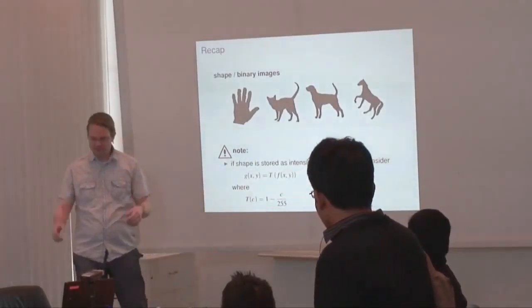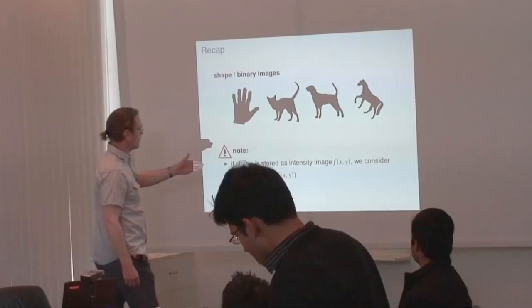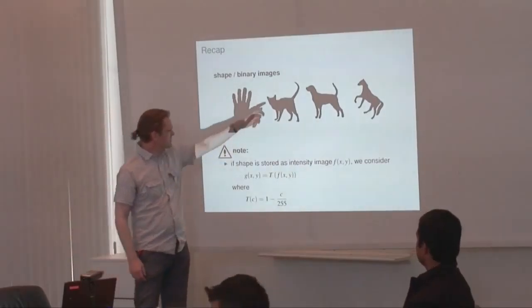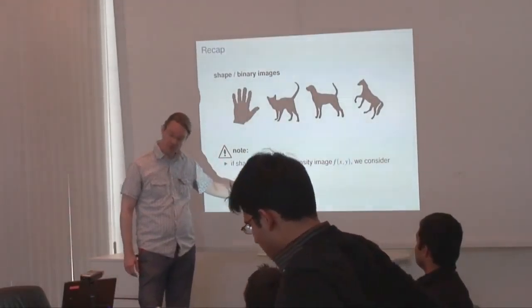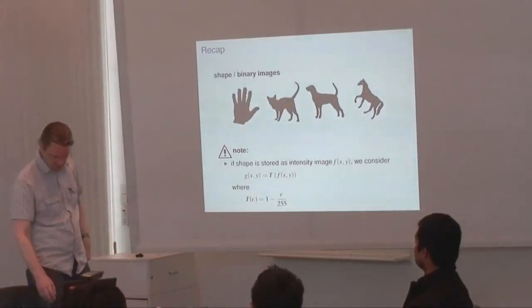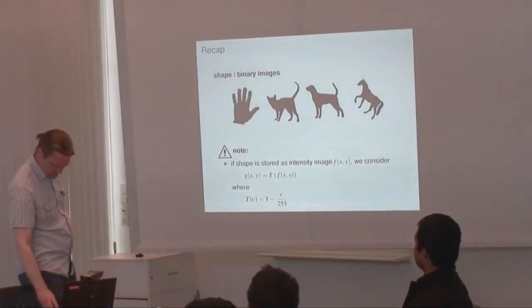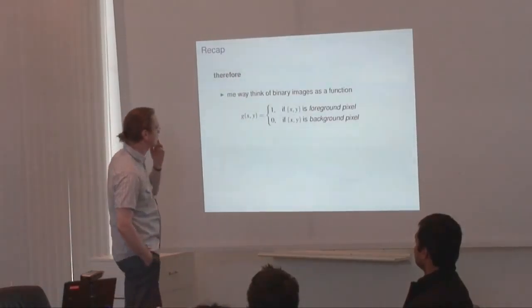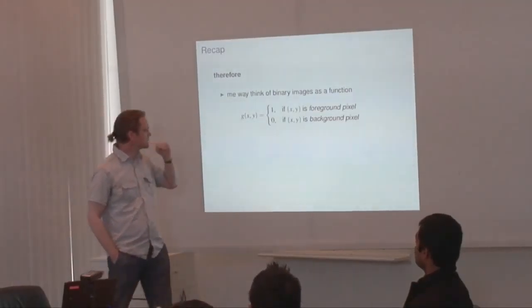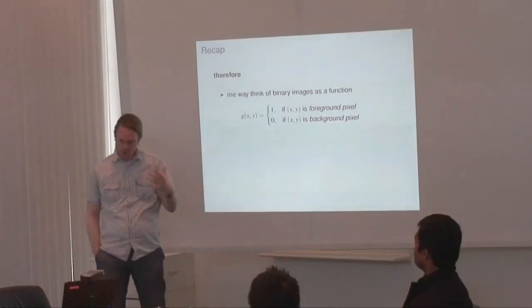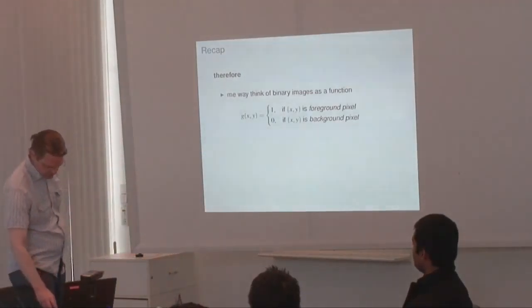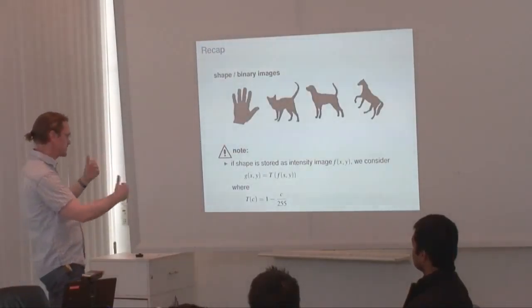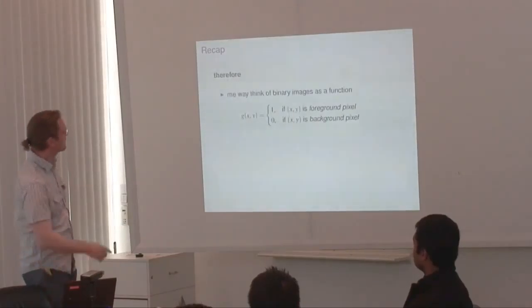We divide pixel intensity by 255. In the case of a white pixel that gives us 1, and if we subtract 1 minus 1 that is 0. If the pixel is black, 0 divided by 255 is 0, and 1 minus 0 is 1. With this simple transformation we can turn binary images into images where a binary image is a function that assumes a value of 1 if the coordinate x, y is a foreground pixel and 0 if it is a background pixel.